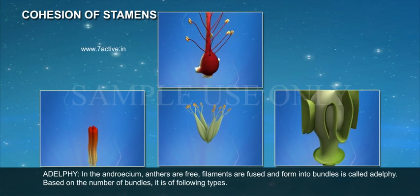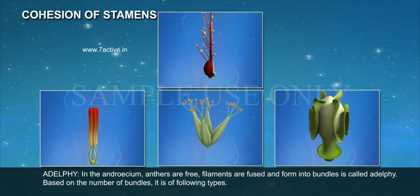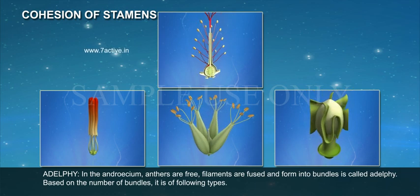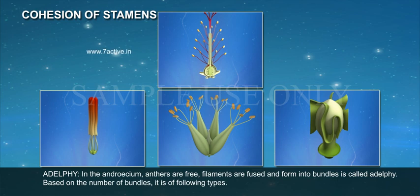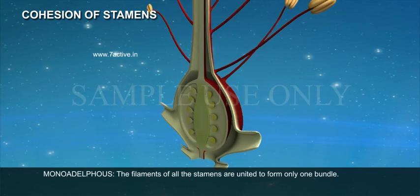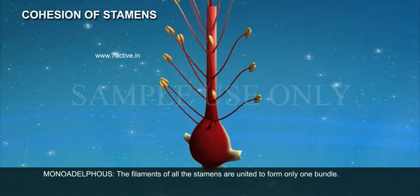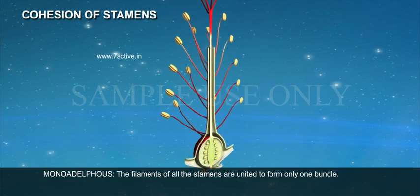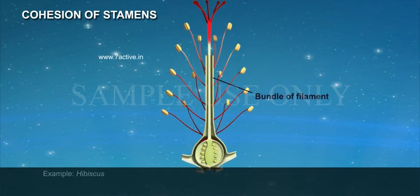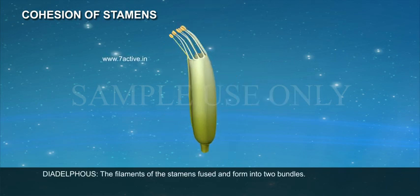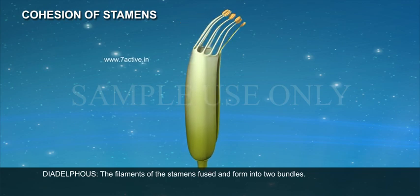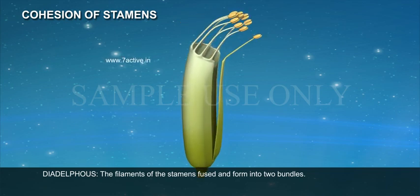Adelphi. In the androecium, anthers are free and filaments are fused to form bundles — this is called Adelphi. Based on the number of bundles, it is of the following types. Monoadelphous: the filaments of all stamens are united to form only one bundle. Example: Hibiscus. Diadelphous: the filaments of the stamens fuse and form into two bundles.